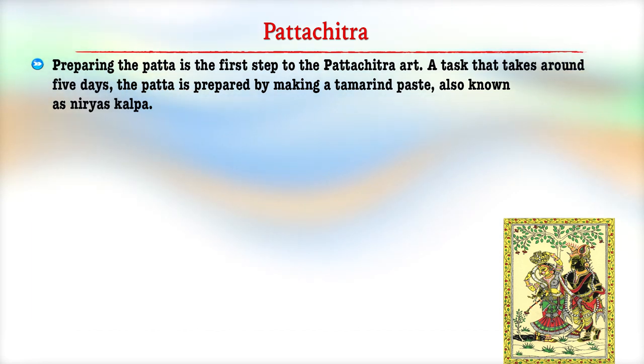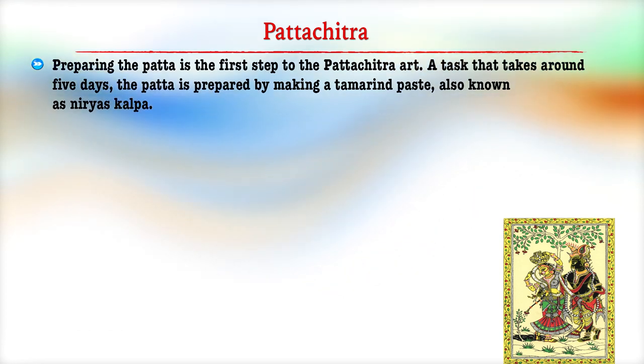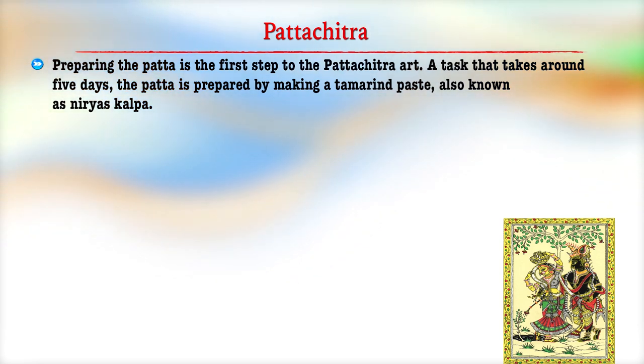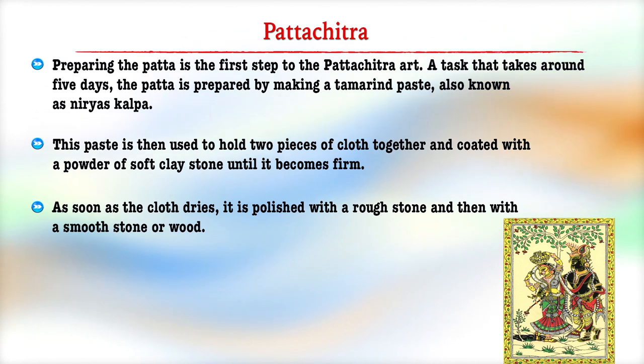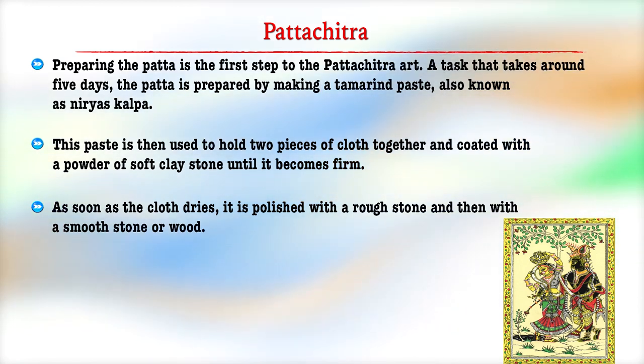Preparing the Patta is the first step in Patta Chitra art, a task that takes around five days. The Patta is prepared by making a tamarind paste known as the Nyas Kalpa, which is then used to hold two pieces of cloth together and coated with soft clay stone powder until it becomes firm. As soon as the cloth dries, it is polished with rough stone and then smooth stone or wood. This canvas is then considered ready to paint. The next stage involves preparing the paints — a technique which is traditional in nature and practiced by the people of that particular region.